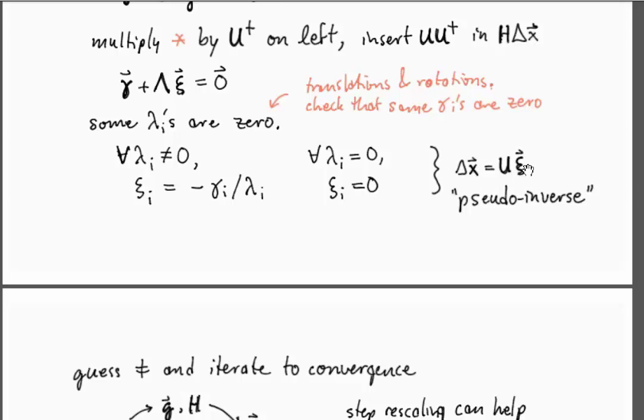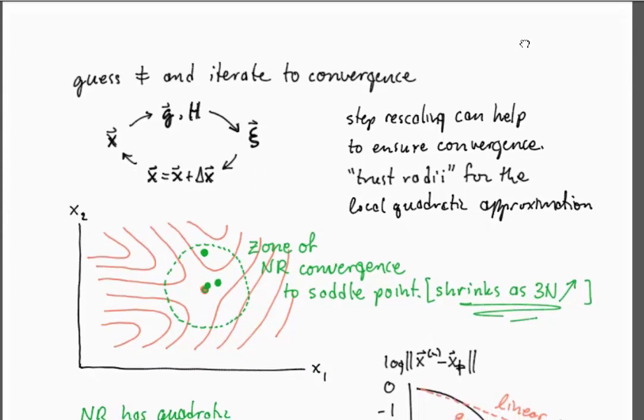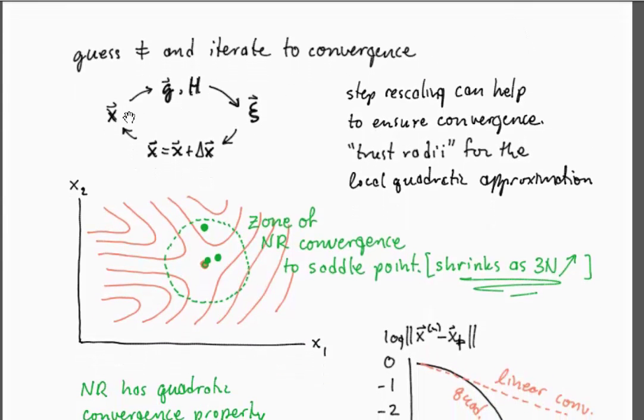The algorithm really looks like this in practice: you take the current location, you compute the gradient, you compute the Hessian, you use those with the pseudo inverse to get the displacement in the eigenvector basis, and then you use that to get a displacement in the Cartesian basis. You update the position and you go back and do the whole process again.